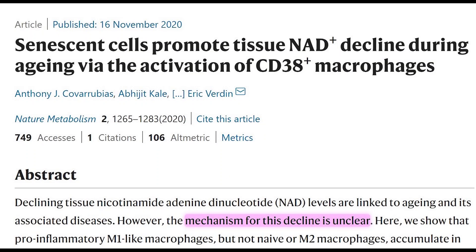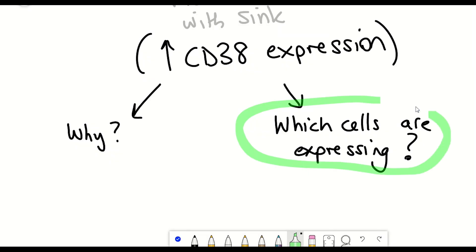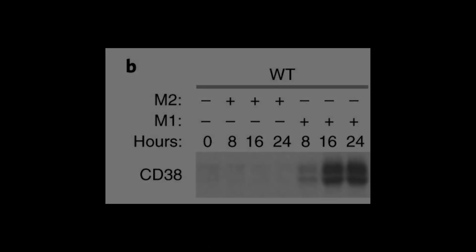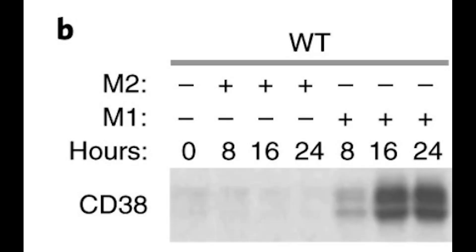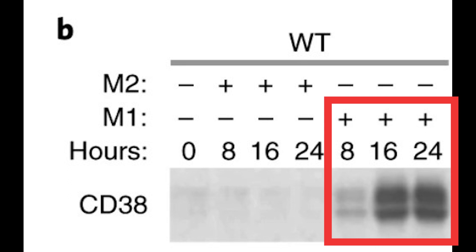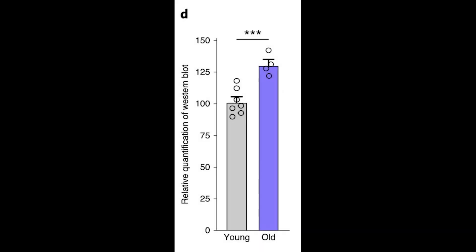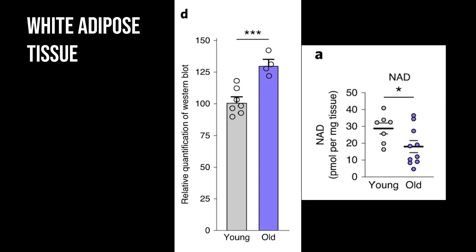The first study that has come out from the Buck Institute was more focusing on which cell types are expressing CD38. What they found was that high levels of CD38 were being expressed in M1-like macrophages, and this could be seen in particular in white adipose tissue and within the liver of mice. This increased expression of CD38 within these M1-like macrophages was associated with reducing the tissue NAD plus levels.